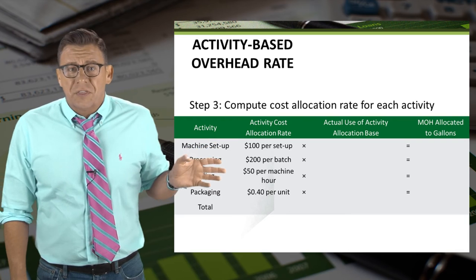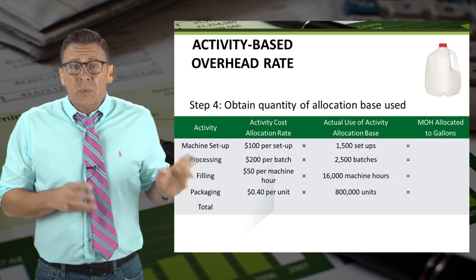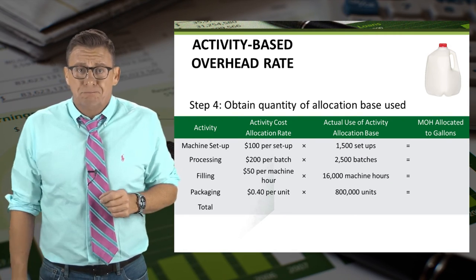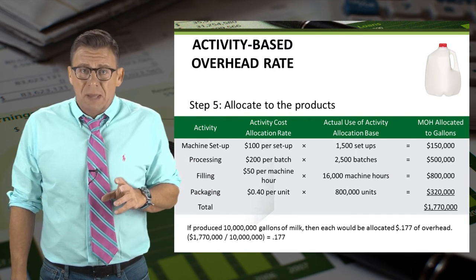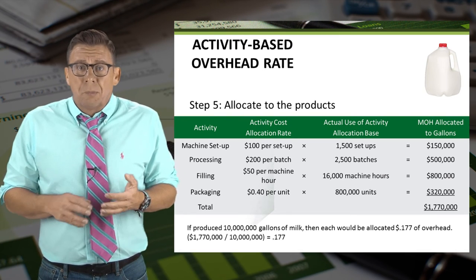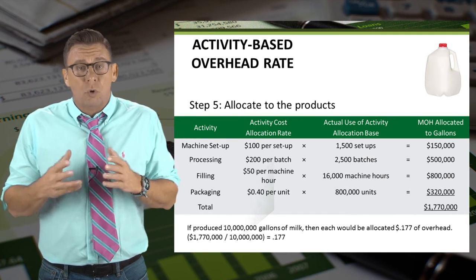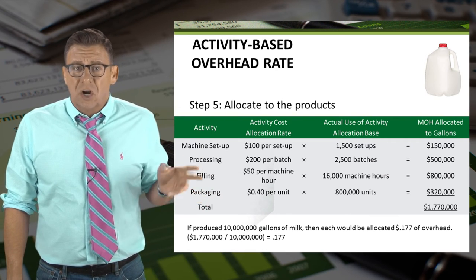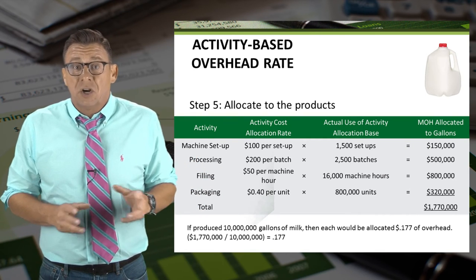Another way to look at the third step is to put the information in a table like I've shown here. Then we can enter the actual number of activities used by a certain product or product line. The fifth step is to allocate overhead to products based on the amount of activity they have used. For example, products that have used more packaging and labeling activity will be allocated more of the overhead from that function. In this example, gallons of milk are allocated $1,770,000 of the $2.5 million in overhead.